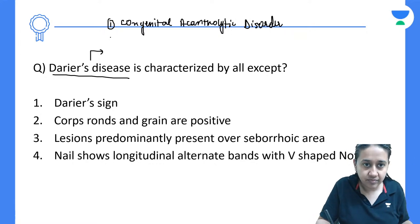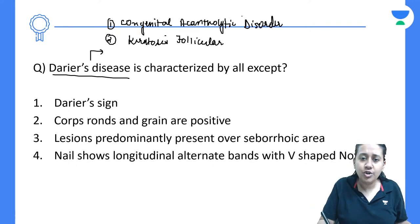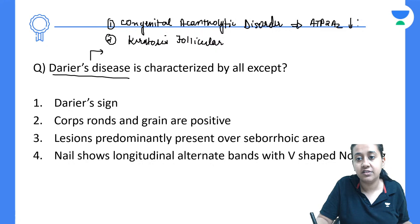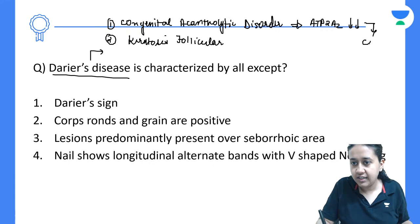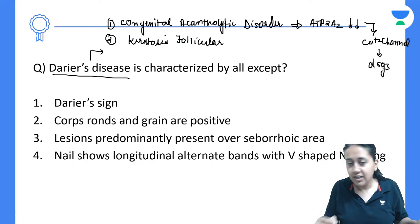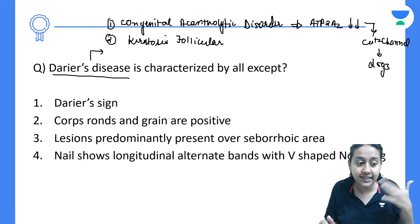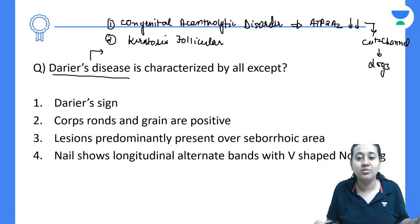Darier's disease, also known as keratosis follicularis, is a congenital acantholytic disorder. There is a defect in the ATP2A2 gene, which reduces calcium channels required for proper functioning of desmoglein 3. This is very similar to pemphigus. As a result, these individuals develop supra-basal clefts, giving rise to acantholysis.